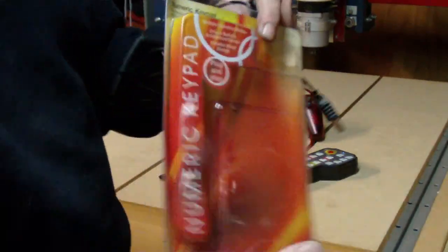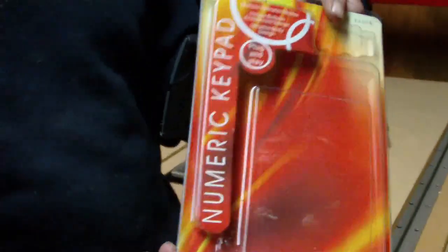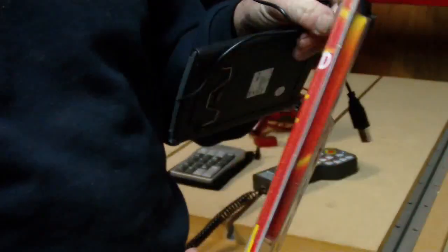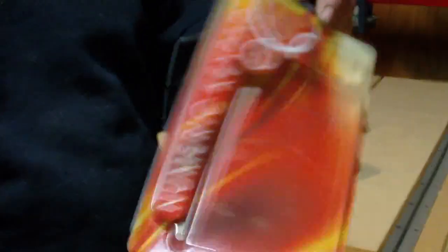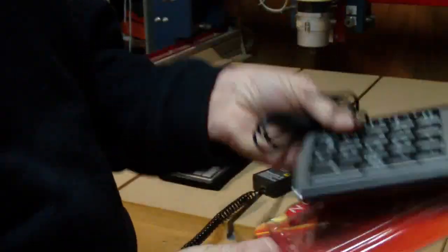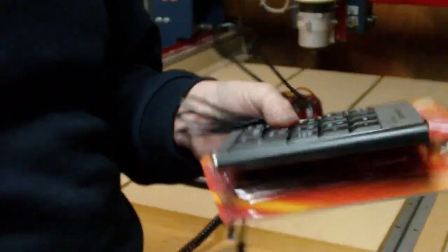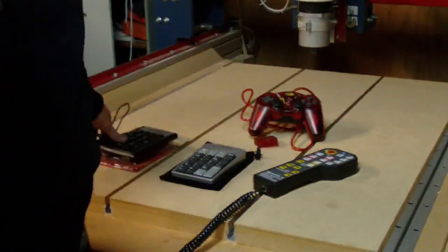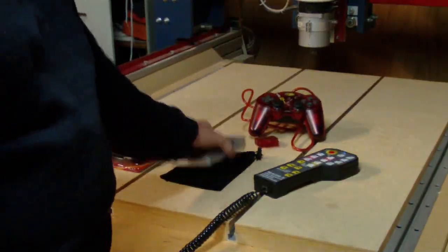So that's basically a numeric keyboard. I got that off eBay again for about three to four dollars. Not very expensive. Doesn't matter if it gets damaged out in the workshop either. They're the cheapest chips, so that's a good option.